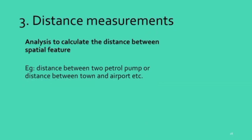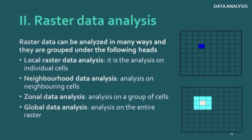Distance measurement is the analysis to calculate the distance between spatial features — for example, distance between two petrol pumps or between a town and an airport. You can do that in the software itself with the help of GIS maps. Raster data analysis is the analysis of raster cell data, analyzed in many ways grouped under the following heads. Local raster data analysis is the analysis on individual cells. Neighborhood data analysis is the analysis of neighboring cells using a point — for example, if there is a well or pond at that point, you can analyze with neighboring data; it is similar to buffering in vector data.